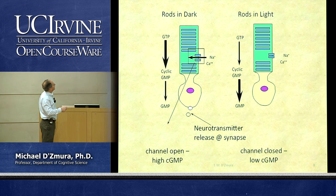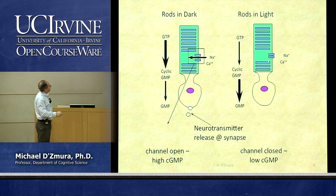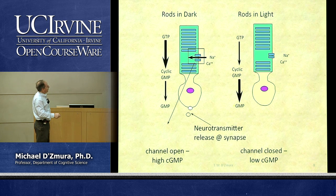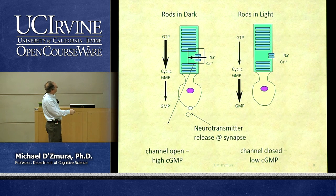Rods in the dark are associated with cyclic GMP keeping the channels open. Rods in the light are associated with inactivity of cyclic GMP — it's being converted to guanosine monophosphate, and channels are closed.